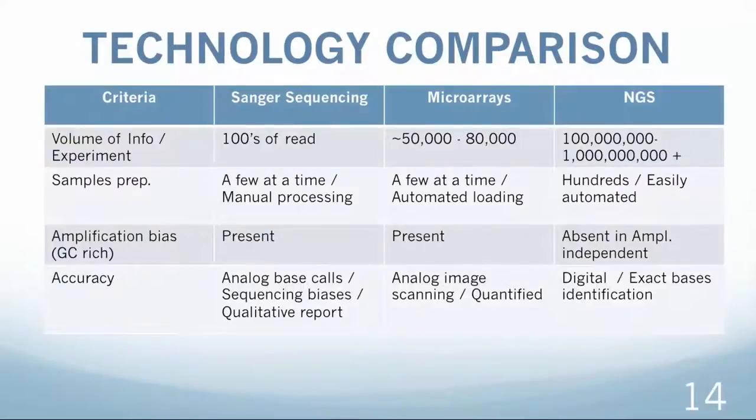Now getting back to NGS, we could compare the existing methods by their output type and amount of information that could be obtained. The general comparison of Sanger method with microarray and next generation sequencing shows a huge difference in the volume of information that can be generated by either technology, number of samples that could be sequenced simultaneously in one experiment, ability to automate the process and the accuracy of results. NGS yields the highest throughput and results in digital base identification with the highest accuracy.